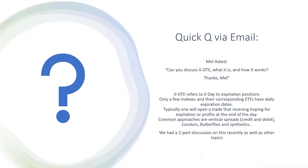We had a question that came in via email from Mel — I responded to your email a little while ago but I'll address it here as well. Mel asked: can you discuss Zero DTE, what is it, and how does it work? Zero DTE refers to zero days to expiration positions, meaning you're trading just on that day — not holding overnight, just trading that one day and closing the position, sort of like day trading.